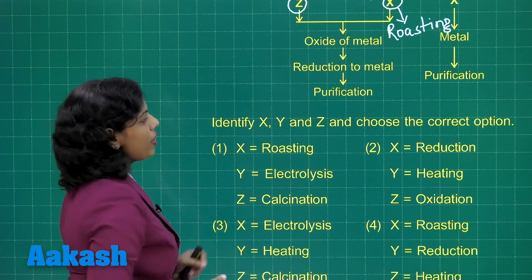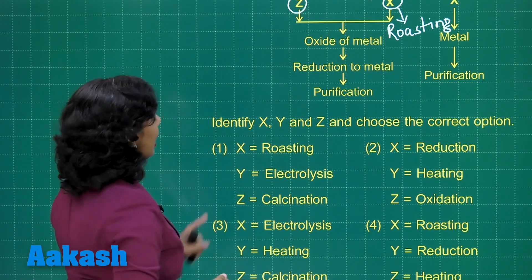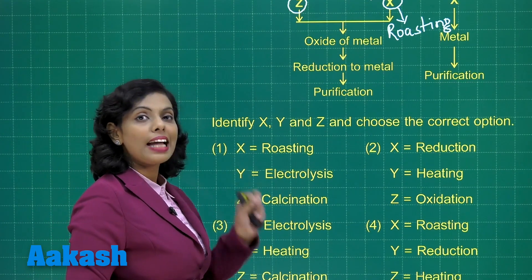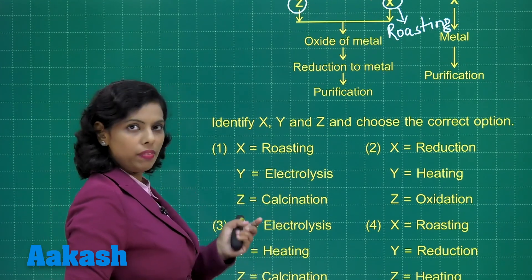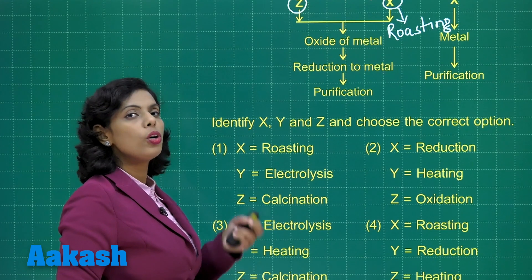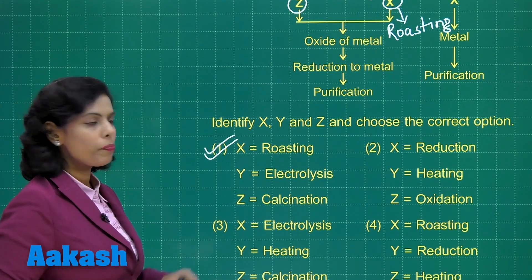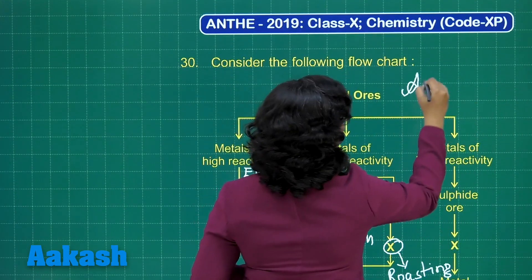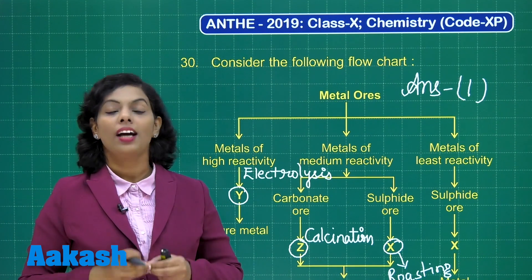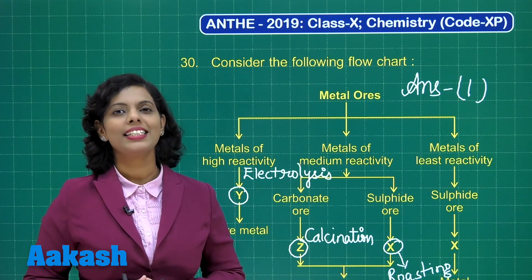Based on that, you need to identify X, Y, and Z and check which option is correct. In option 1: X is roasting — correct; Y is electrolysis for highly reactive metals — correct; Z is calcination, where metal ore is heated in absence or limited supply of oxygen — correct. So the first option is correct, no need to check other options. The correct answer for this question is option 1. I hope all the questions of the chemistry section are clear. All the best for your results and thank you so much for watching.